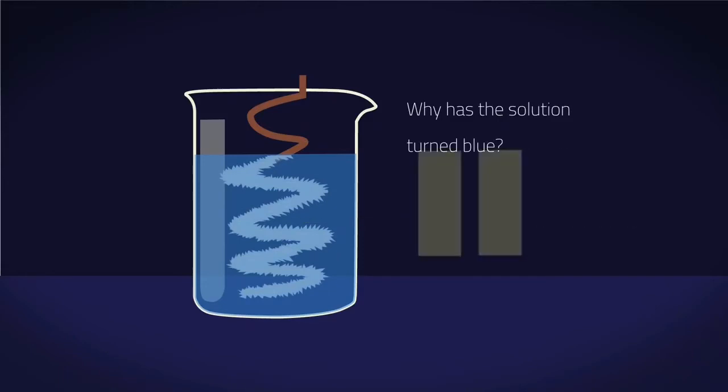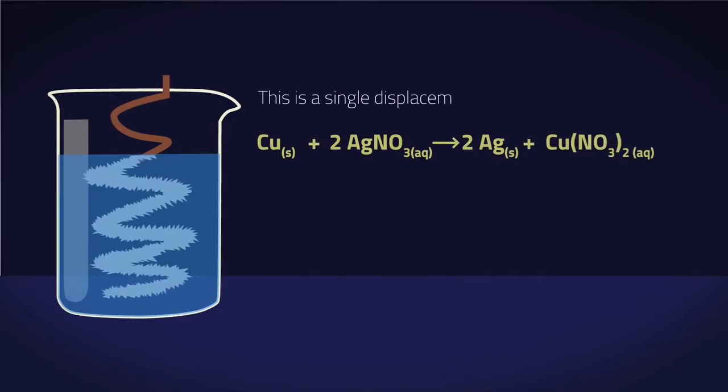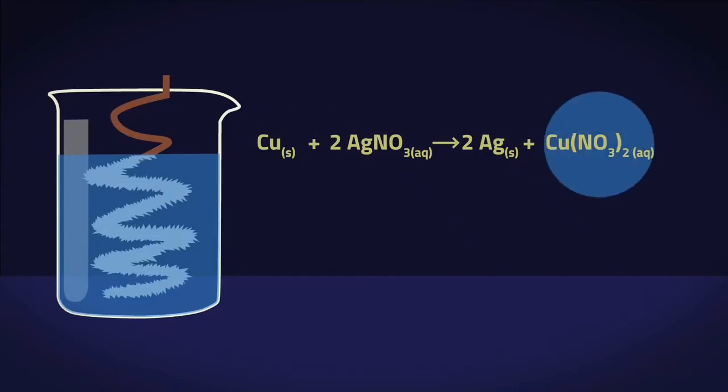Why has the solution turned blue? Pause and think. This is a single displacement reaction. Copper metal, which is higher on the reactivity series, has displaced silver in silver nitrate. The solution has turned blue because of the copper ions in the solution.